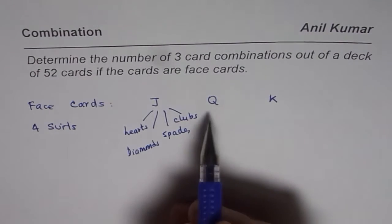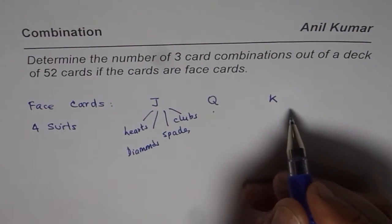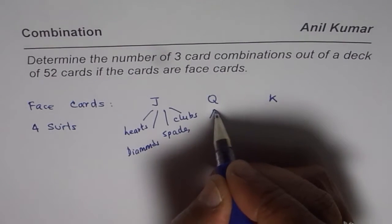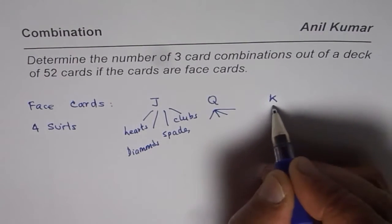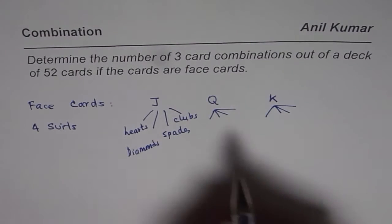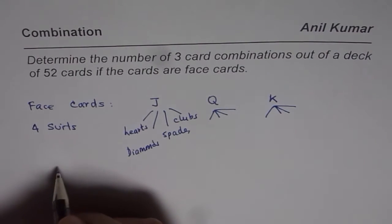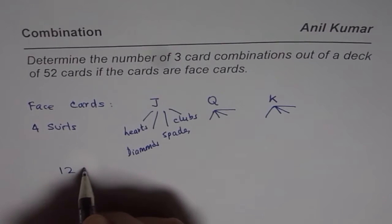Now that is for Queen and King also. So there are 4 types of each. That means in all, we have 12 face cards.